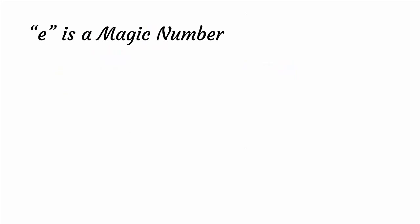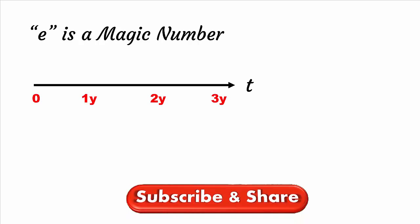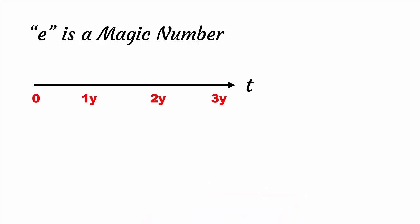In order to understand, we take an example of growth. Suppose we invest some money which doubles at the completion of a unit time period, say one year. As shown on the timeline, three years are shown. Every year it doubles in value, which means 100% increase after each year.